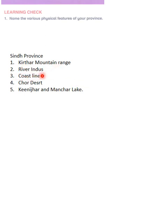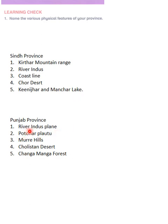For the Sindh province: the Kirthar mountain range is there, the River Indus flows through it, the coastline is there, the Chor desert, and the Kinjar and Manchur lakes. Those are just five I have listed — there can be 10 or 15; that will be up to you. You must exercise your own mind.